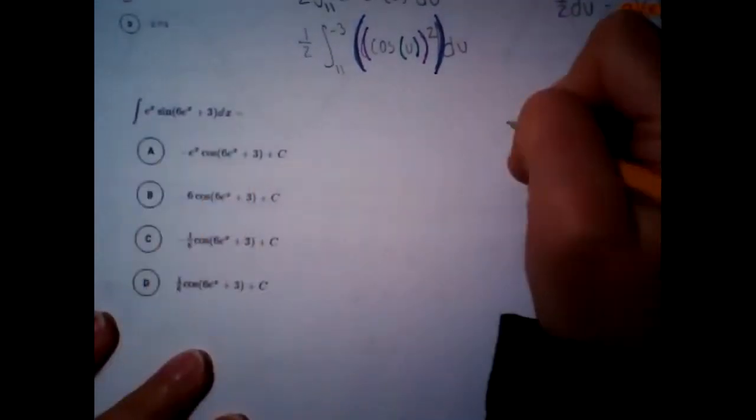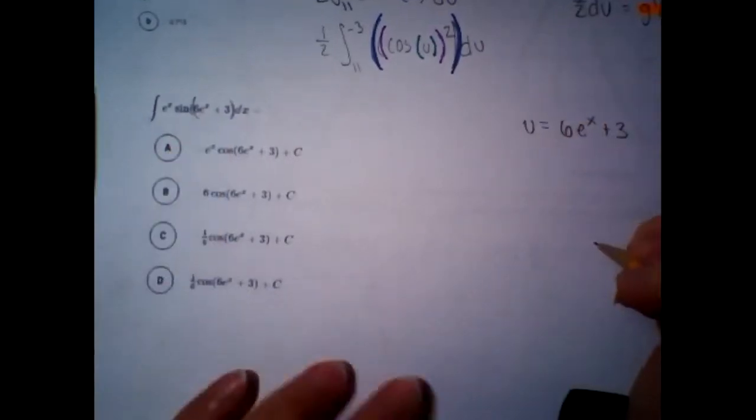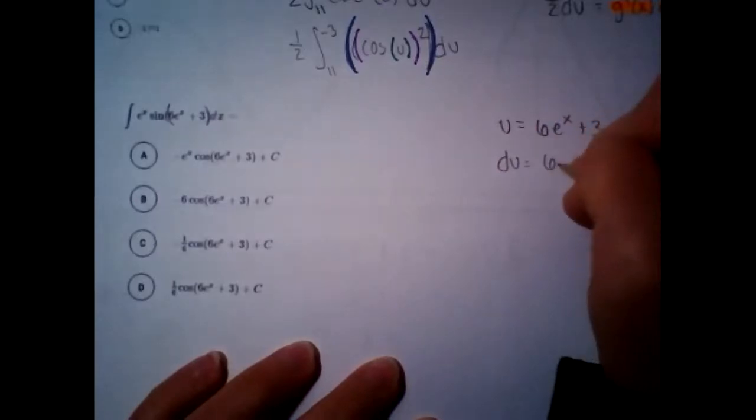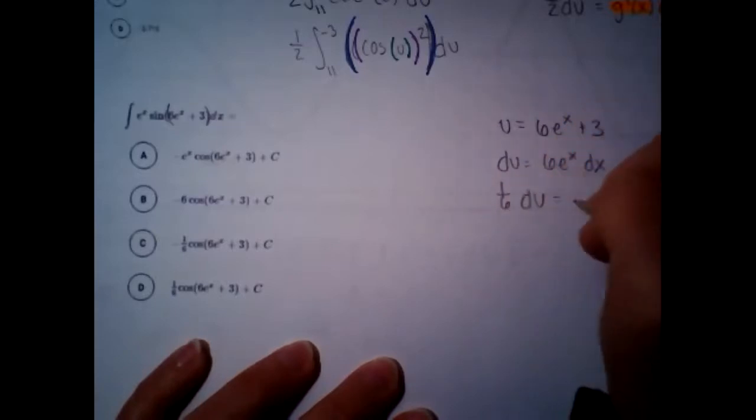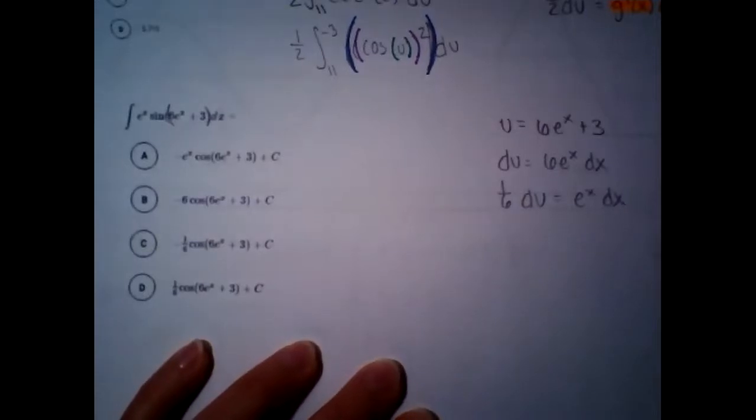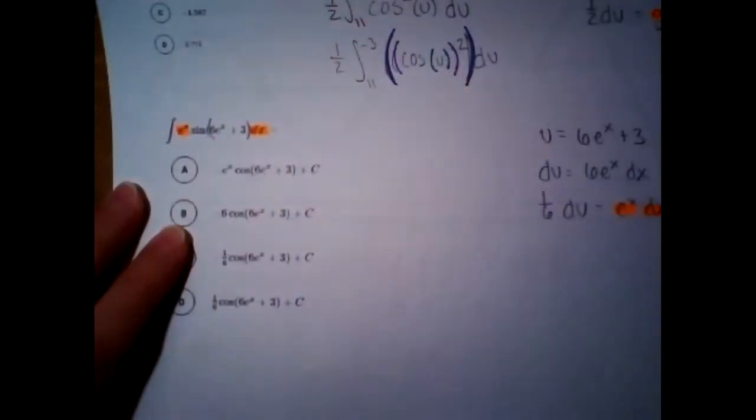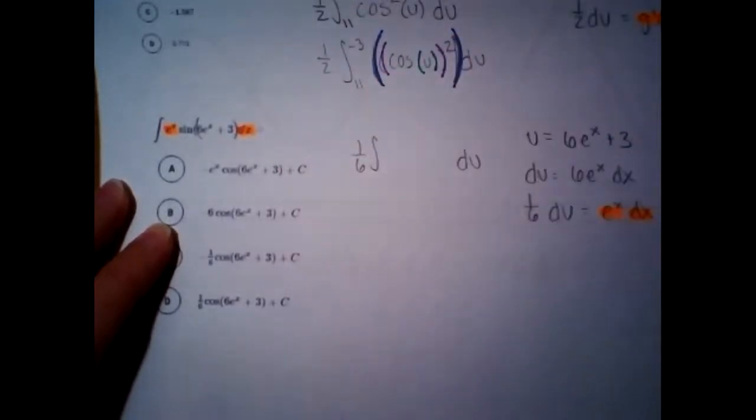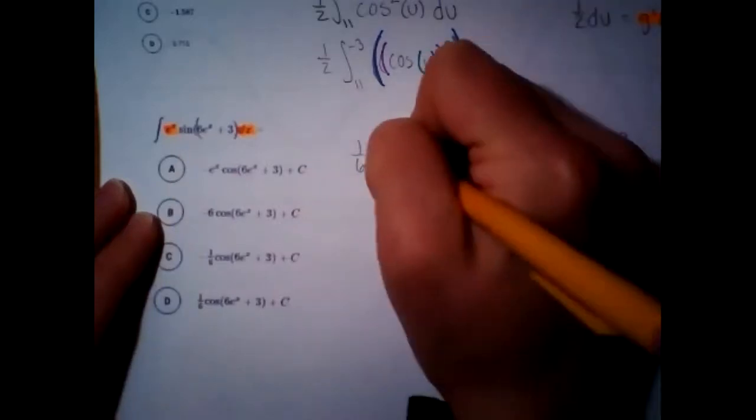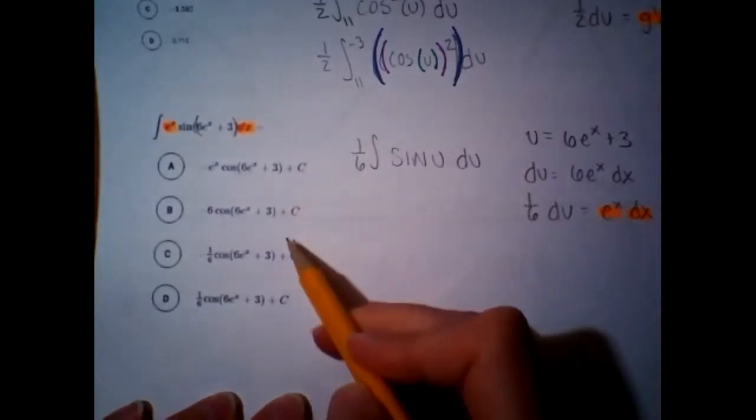Alright. This is going to be another u substitution. We're going to let u equal this inside stuff. So, the guts of the problem. So, six u to the x plus three. And so, that derivative is six e to the x dx. Remember, it's itself. And we're going to adjust with a one-sixth. So, we are going to substitute for e to the x dx. And in its place, we're putting one-sixth. And so, what's still there is sine of u. No boundaries on this one. So, I don't have anything to adjust. Instead, all of these say plus c.